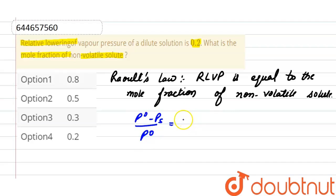And here in the question, relative lowering of vapor pressure is 0.2, so the mole fraction of non-volatile solute is also equal to 0.2. The correct option here is option 4.